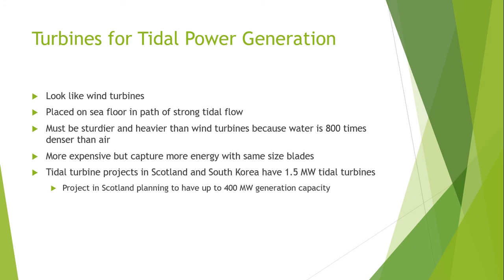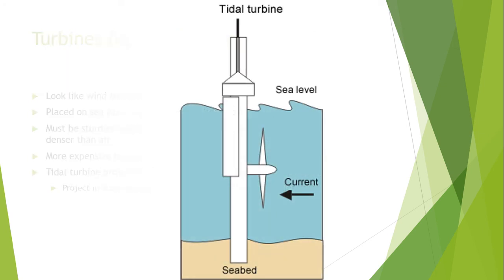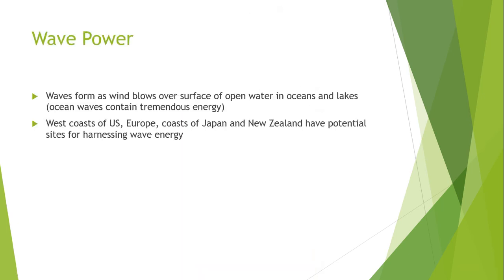Tidal turbine projects in Scotland and South Korea have 1.5 megawatt tidal turbines, with the Scotland project planning to have up to 400 megawatts of generation capacity. The turbine structure is embedded in the sea — its base is grounded in the seabed and the tides rotate its fins to produce electricity.